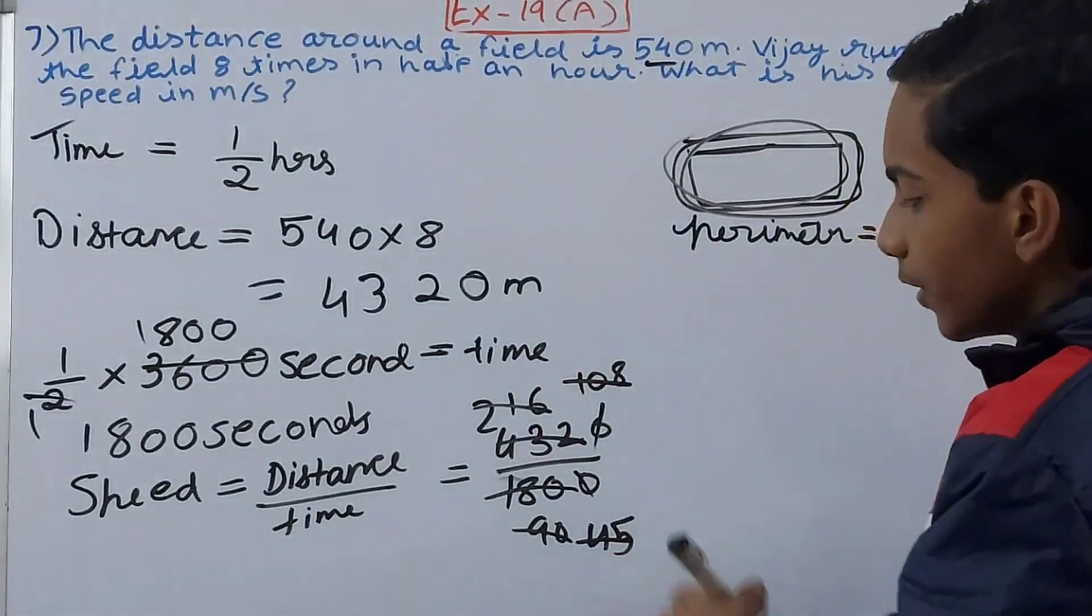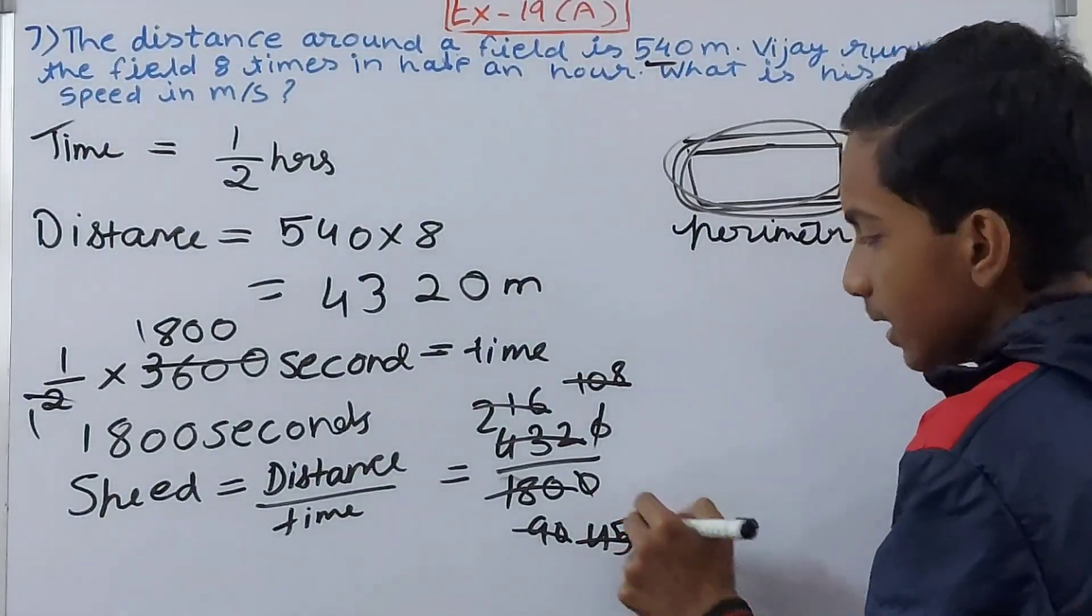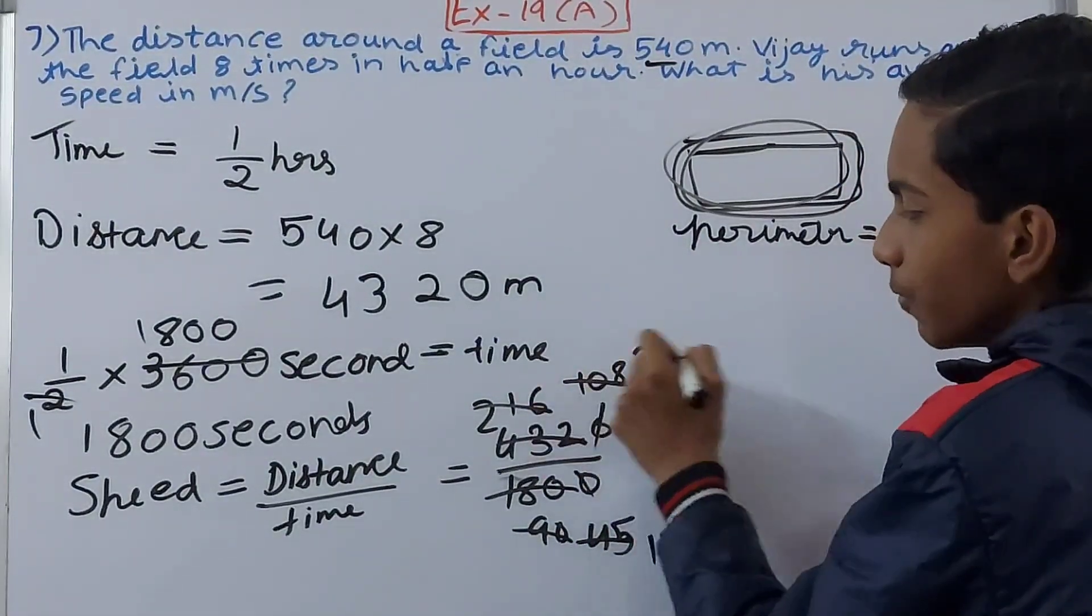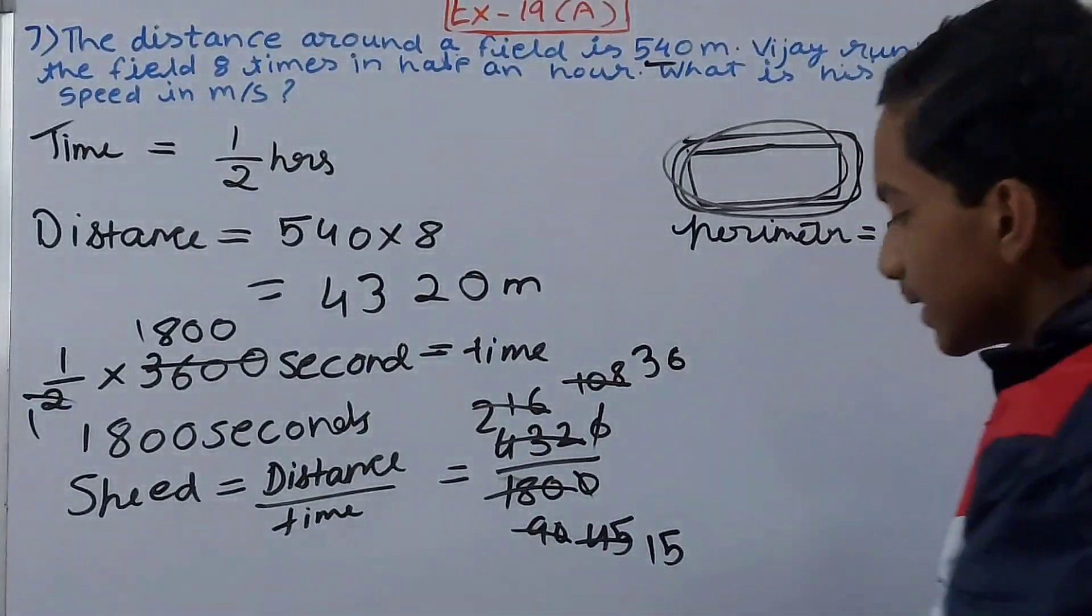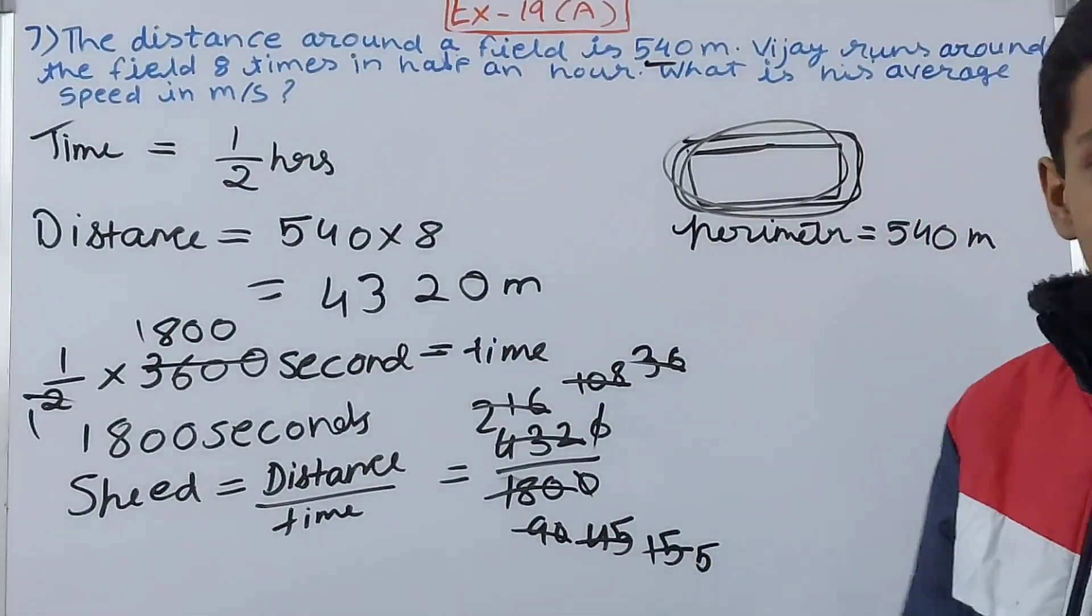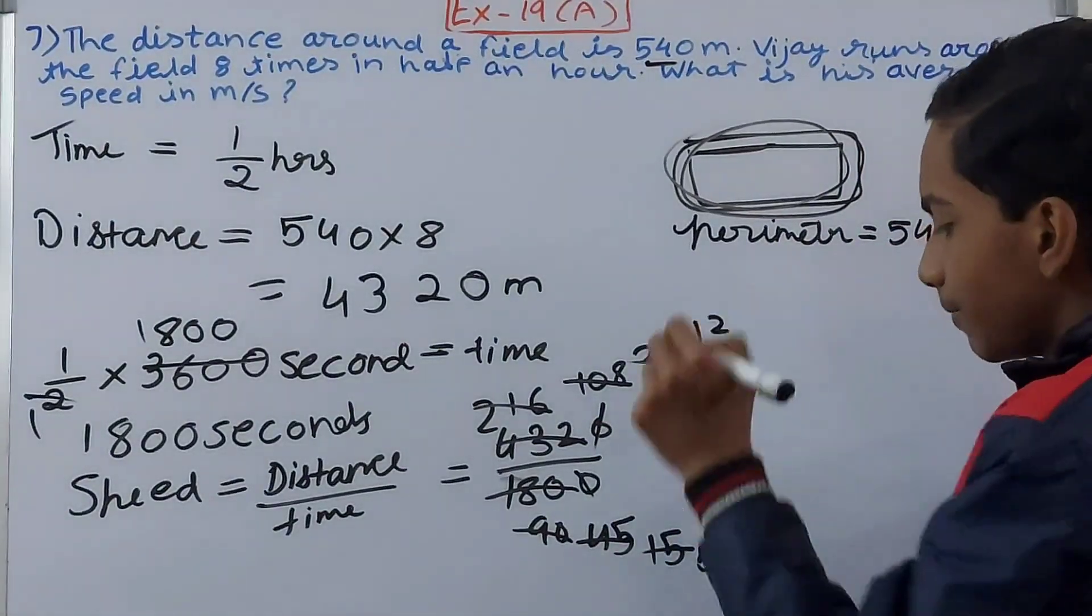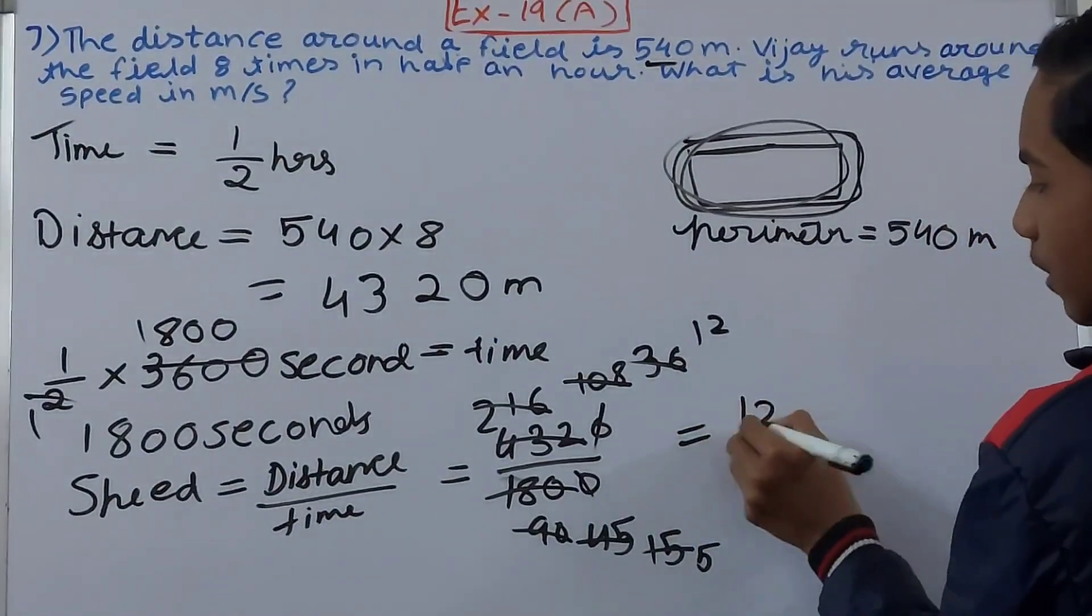Again cancel this - it will cancel once again. 15 goes 5 times by 3, 36 goes 12 times by 3. Now it won't cancel. So we get 12 upon 5 meters per second - that becomes our speed.